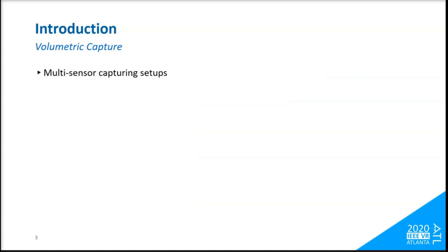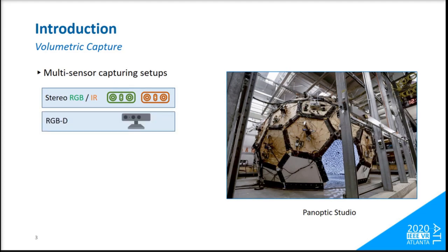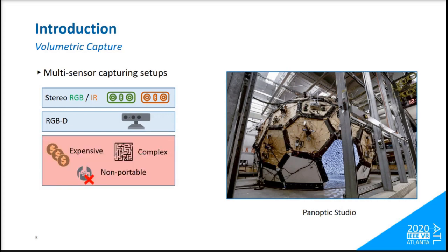An example of such system is Panoptic Studio, which consists of over 100 RGB IR cameras, 10 RGB-D cameras. This system is at the cutting edge of the volumetric capture technology, despite the fact that it is expensive to build, complex to assemble, and non-portable.